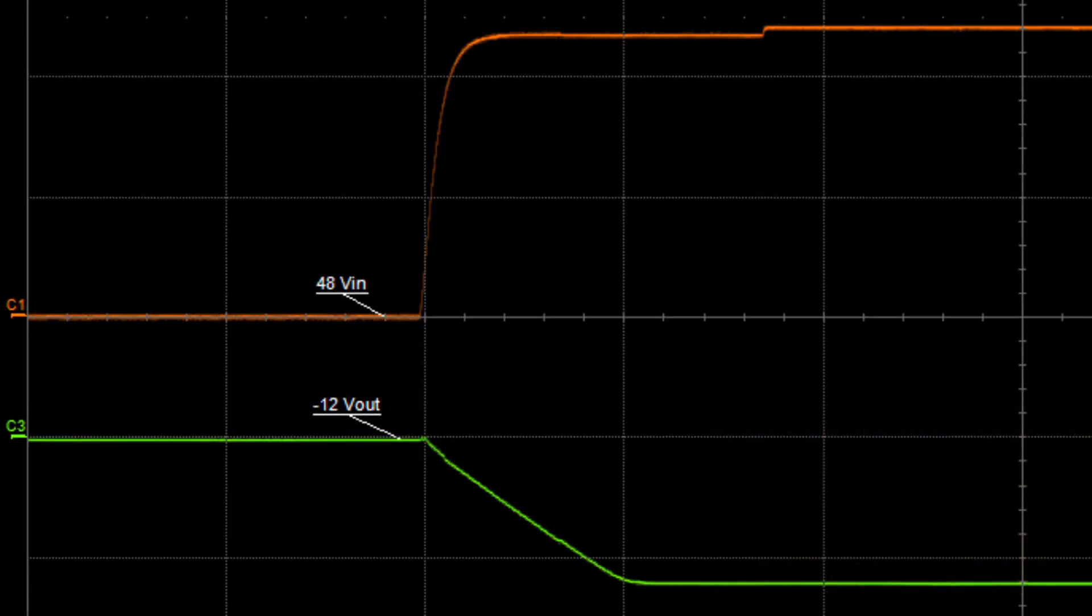As you can see, the output rail has dropped down to minus 12 volts and the input rail has climbed to 48 volts. This is a smooth soft start startup.